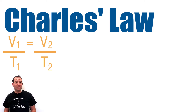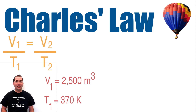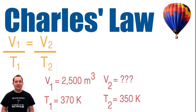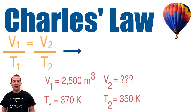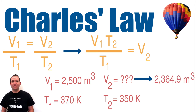This will allow the balloon to compress or decrease its volume. The equation for Charles's law relates volume and temperature in a before and after scenario. For example, if a hot air balloon has a volume of 2,500 meters cubed and a starting temperature of 370 Kelvin, if the hot air balloon cools to 350 Kelvin, what will its new volume be? If we solve the Charles's law equation algebraically so that V2 is by itself and then substitute in our values, we can see that the new volume would be 2,364.9 meters cubed.